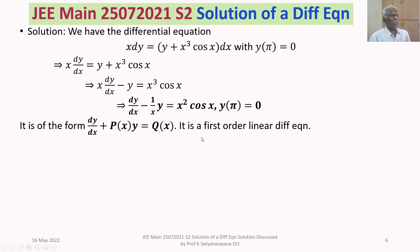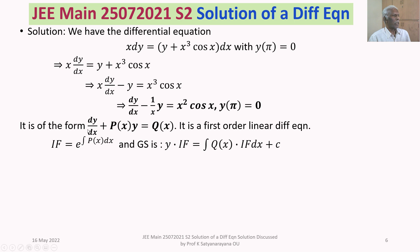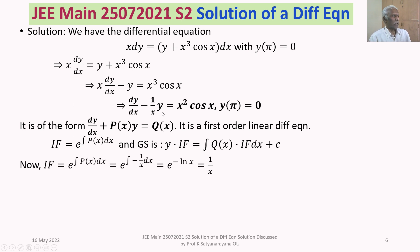This differential equation is of the form dy/dx plus P(x)·y equals Q(x), which is a first order linear differential equation. To solve it, we find the integrating factor, given by e^(∫P(x)dx). In our case, P(x) is −1/x, so the integrating factor is e^(∫−1/x dx) = e^(−ln x) = x^(−1) = 1/x.